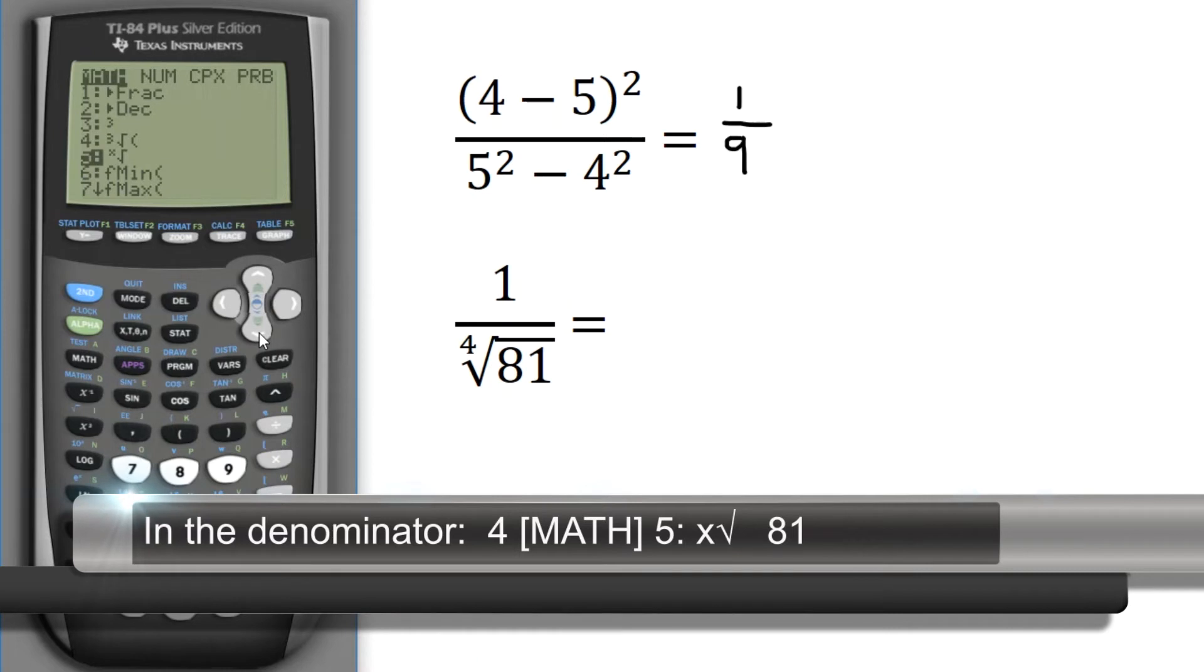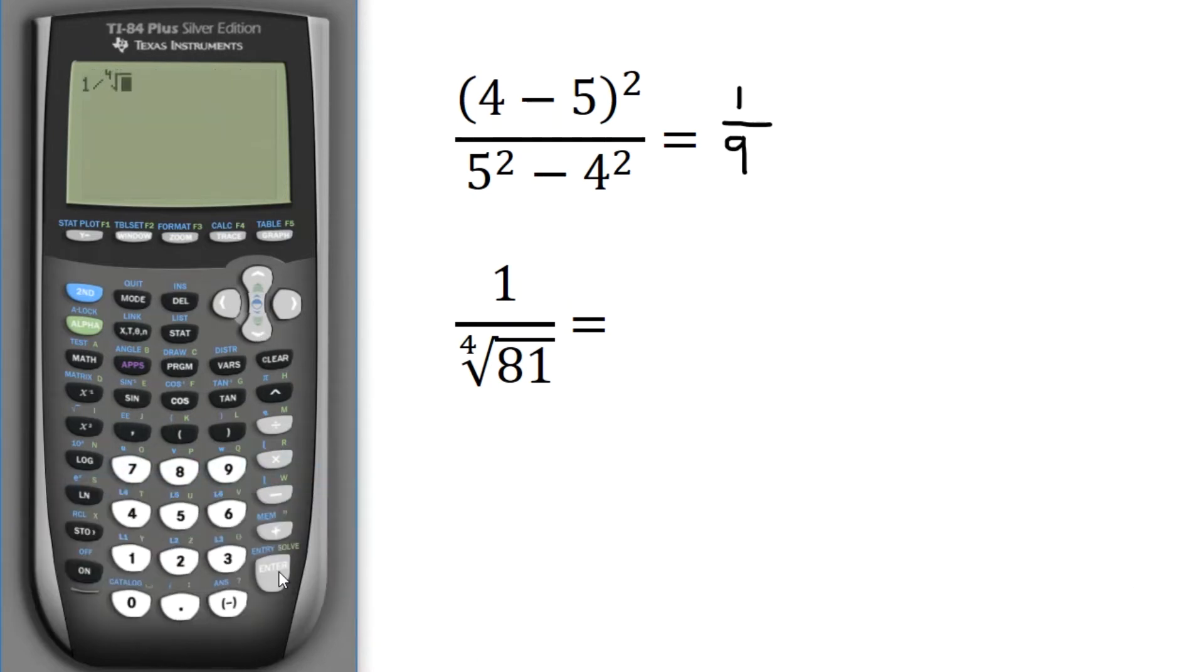I can scroll down to 5, or I can hit the 5 key, and that, hit Enter, and that puts that at the 4th root, because I put 4 first of all 81.